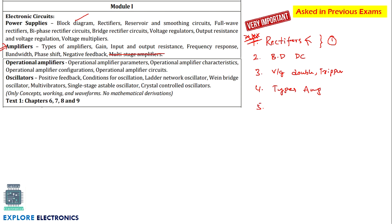The next important question is negative feedback. The characteristics of negative feedback have been asked in previous exams, so negative feedback is very important. You need to write five to six characteristics with one or two lines of explanation. The next question we can predict is in operational amplifiers — the ideal op-amp characteristics.